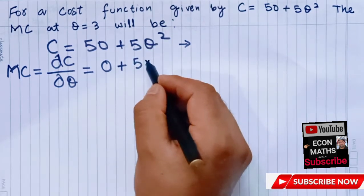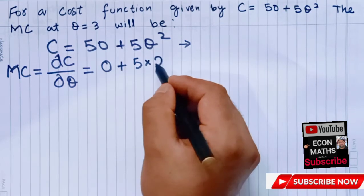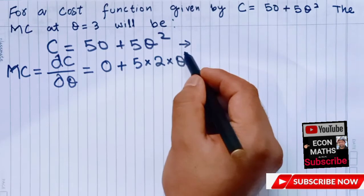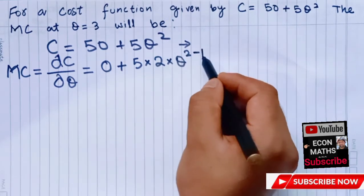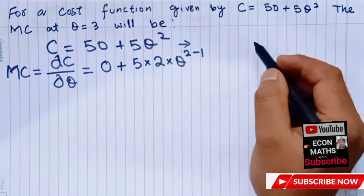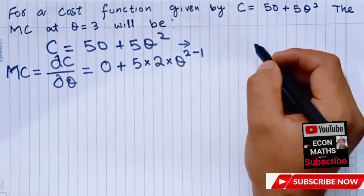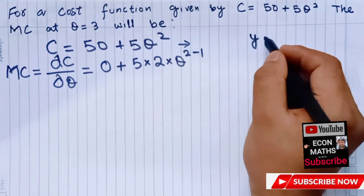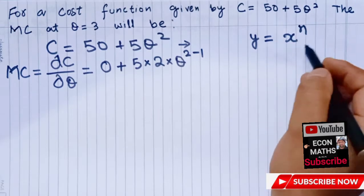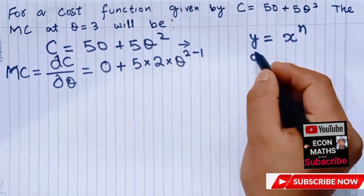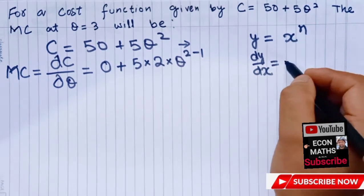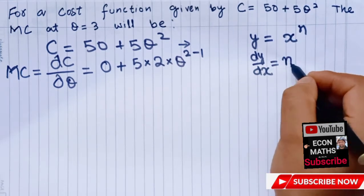It is multiplied with this exponent, that's 2 into Q to the 2 minus 1, so we subtract exponent by minus 1. The rule is: if we are given y equals x raised to the power n, then the derivative of this is dy divided by dx.